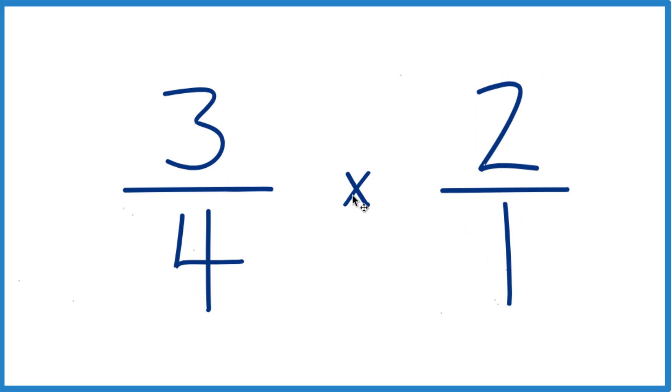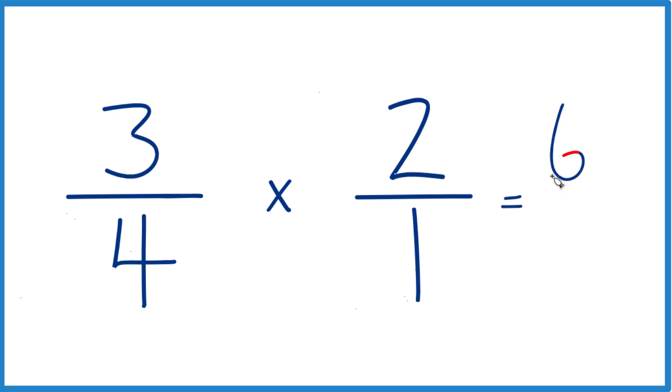Now we have 3 fourths times 2 over 1. That's a lot easier to deal with because we can just take 3 times 2, that's 6, and 4 times 1, that's 4. So 3 fourths times 2 over 1 is the same as 3 fourths divided by 1 half, and we get 6 fourths.